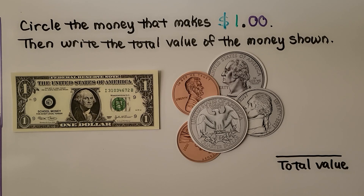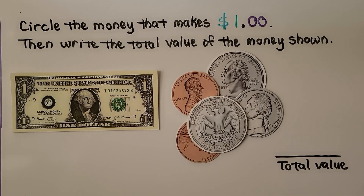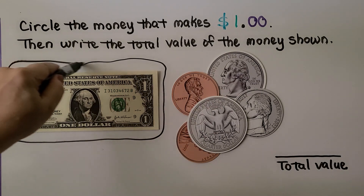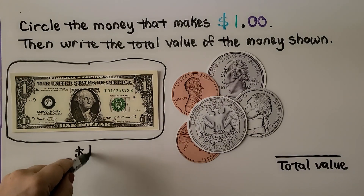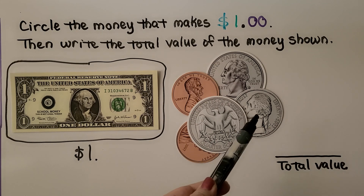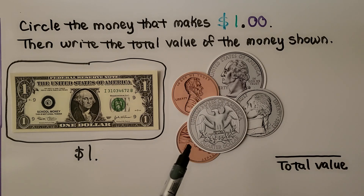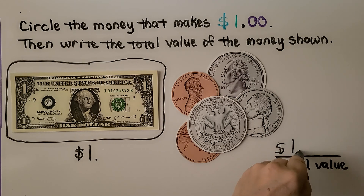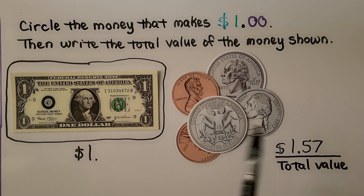Here it's telling us to circle the money that makes one dollar, then write the total value of the money shown. I see a one dollar bill — that makes one dollar, so we're going to circle that. Now we know we have one dollar. We need to count the cents. We have two quarters — that's 50 cents. We have a nickel — that's 5 cents. So that's 50 plus 5, that's 55, 56, 57. That means we have one dollar and 57 cents. We write our dollar sign, a one for the one dollar, a decimal point, and then the 57 cents.